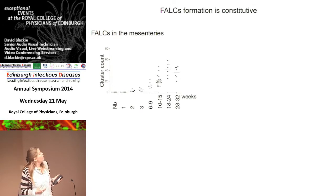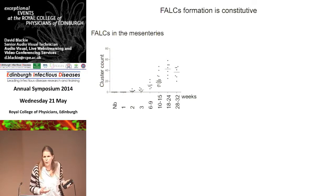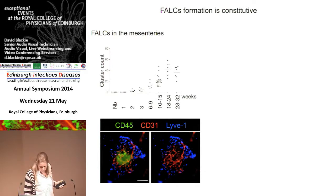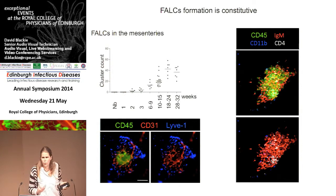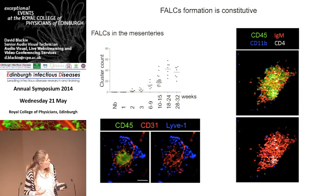Those fat-associated lymphoid clusters start to form after birth, around three weeks of age in mice, and their number gradually increases as the mice age, reaching a plateau later on. They are very highly vascularized — you can see the blood vasculature here in red. They are mostly composed of B cells, marked here with IgM, and they are very strongly IgM positive. In fact they are mostly B1 cells — the B cells found in the peritoneal and pleural cavity that produce natural antibodies and are very important early on during infections.